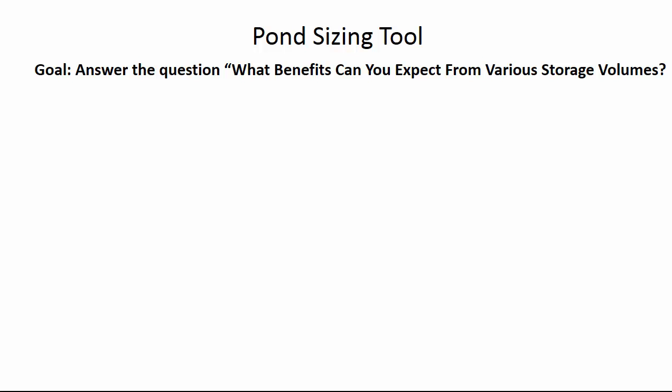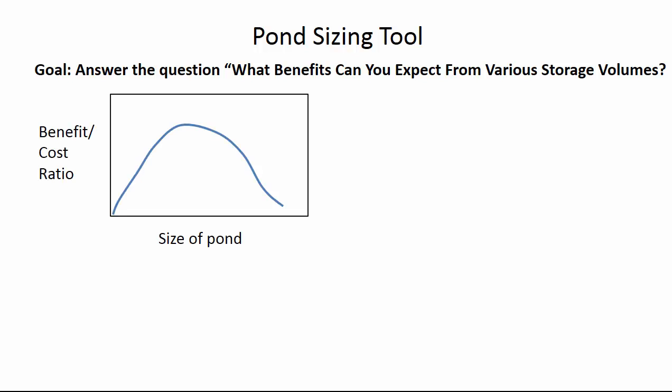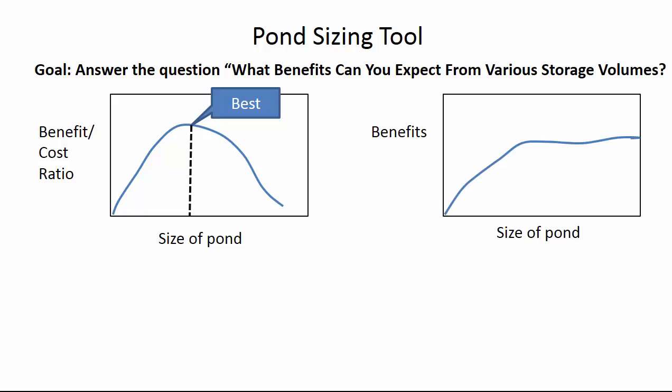The goal of the pond sizing tool is to help people decide how big a pond they need by answering the question about the benefits they can expect from various storage volumes. This question would be easy to answer if we had a nice benefit-cost ratio function where there was a certain best size of the pond. We certainly don't have costs, so the best we can hope for is some kind of a function of benefits as a function of size of pond.